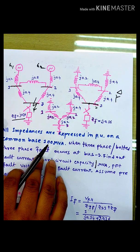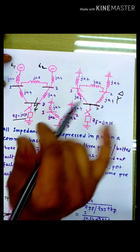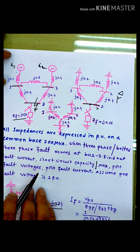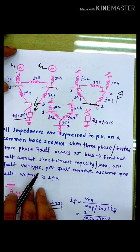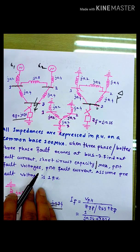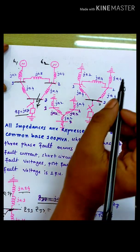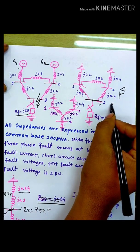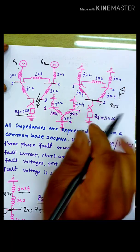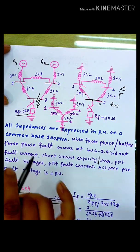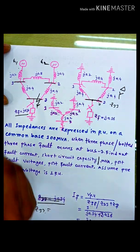I have to apply the x_kk. In this case, I have to apply the x_kk. The x_kk is the source short circuit reactance.